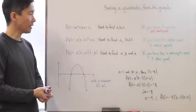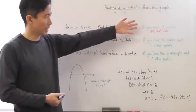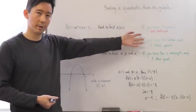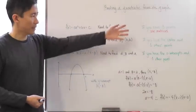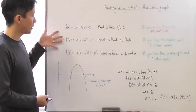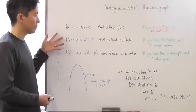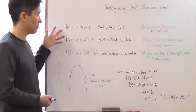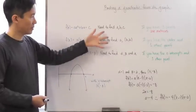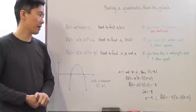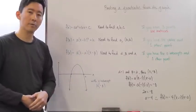To wrap up, it's going to be important that you know exactly what type of information is given from your graph. And then, based upon that information, you're going to use the appropriate quadratic function form in order to find the values of the parameters in order to come up with the actual function itself.